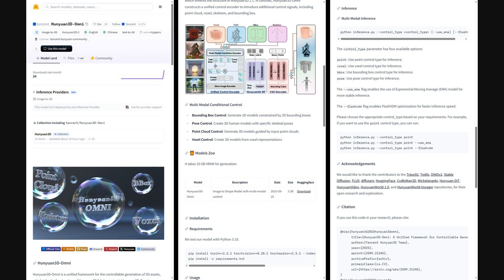You can find 3.3 billion parameter Hanyuan 3D Omni weights and simple commands for point, voxel, bbox, pose control with optional EMA and flash VDM.